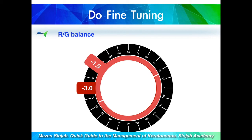After that, I fine tune the sphere using the red-green balance. Suppose after this red-green balance I find that minus 2.75 diopter sphere with minus 1.5 cylinder at 25 degrees is the best.